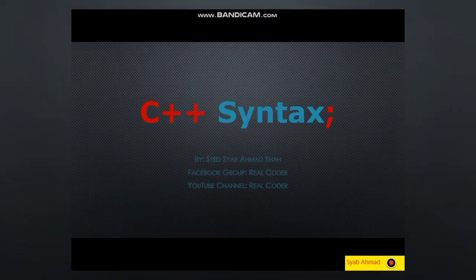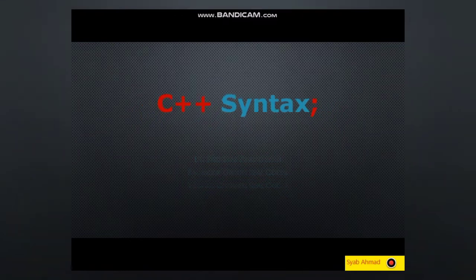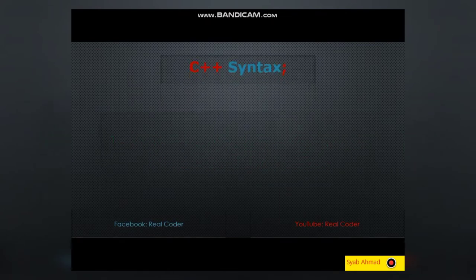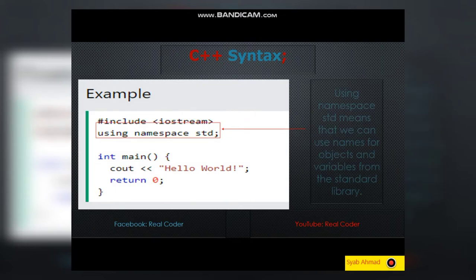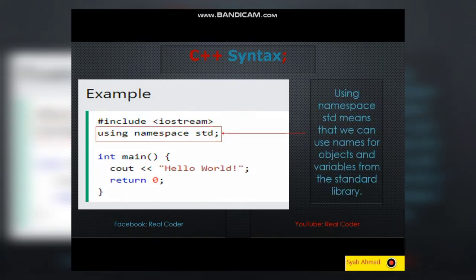First of all, let's break up the following code to understand it better. Hashtag include iostream is a header file library that lets us work with input and output objects, such as cout, used in line 5. Header files add functionality to C++ programs. Using namespace std means that we can use names for objects and variables from the standard library.